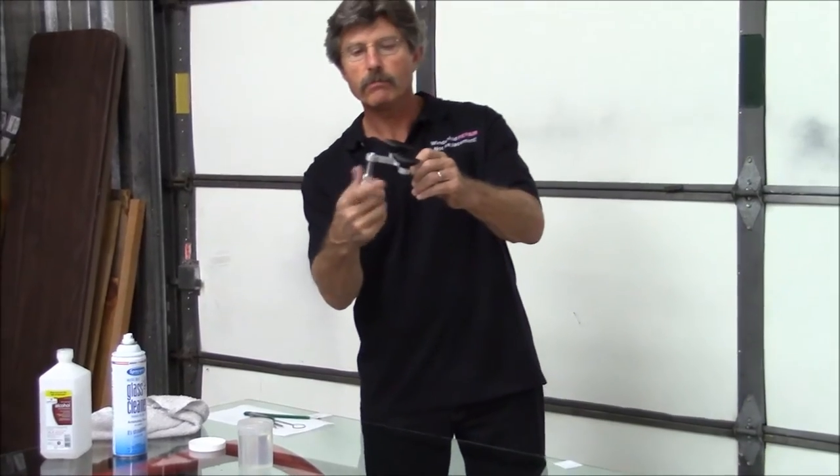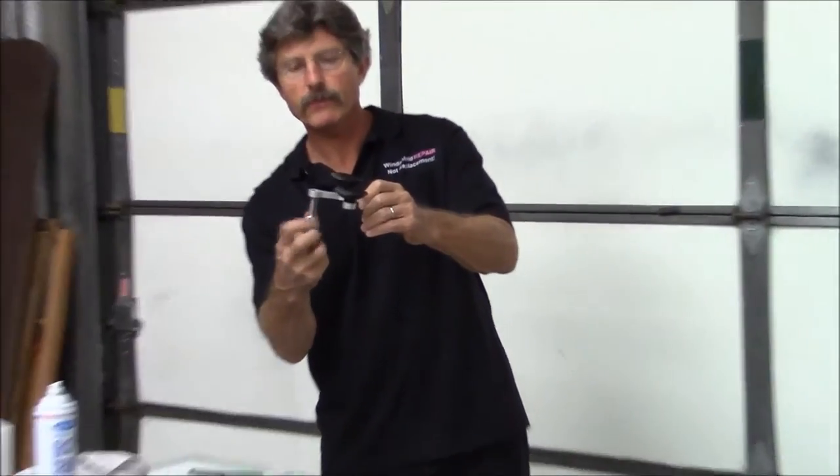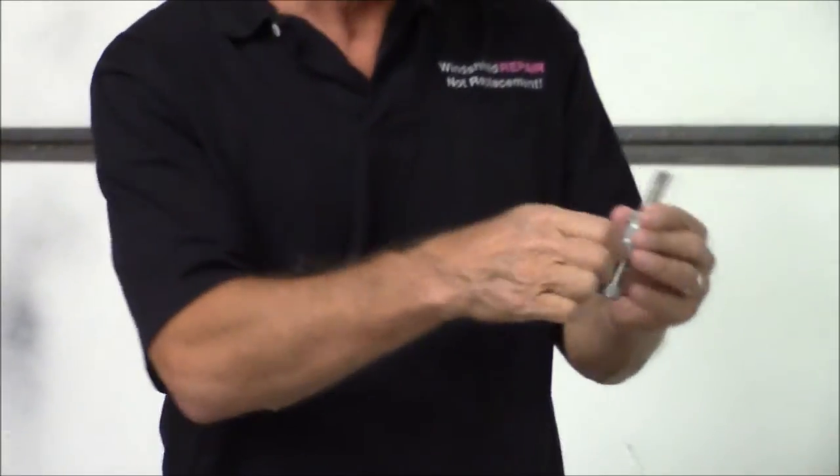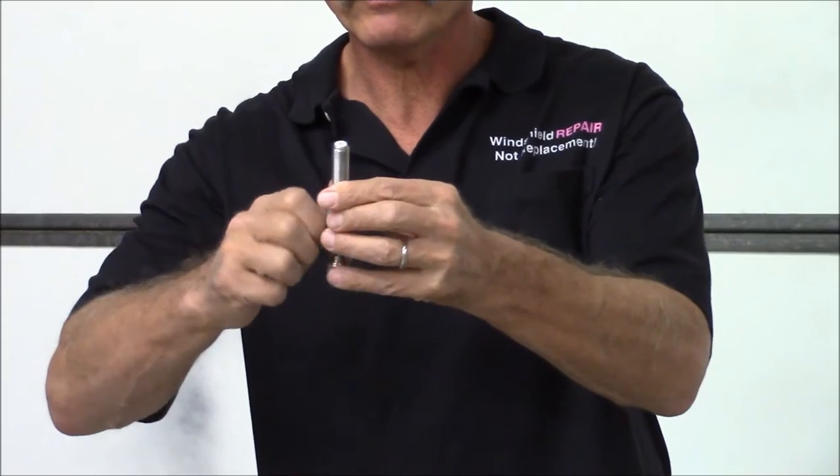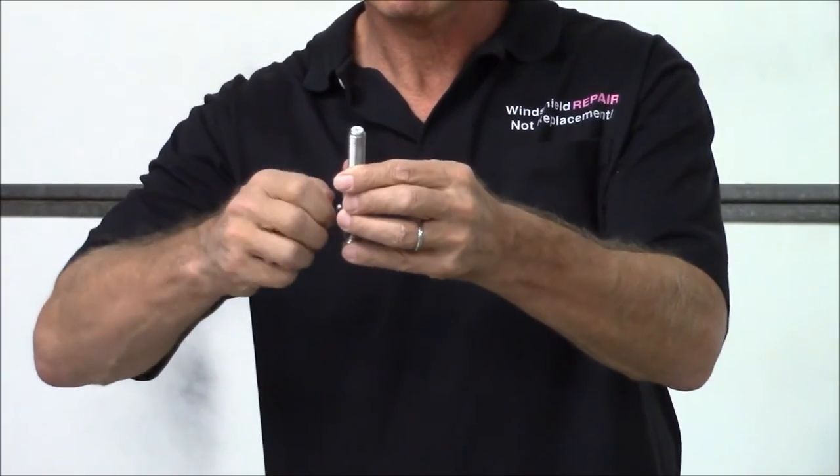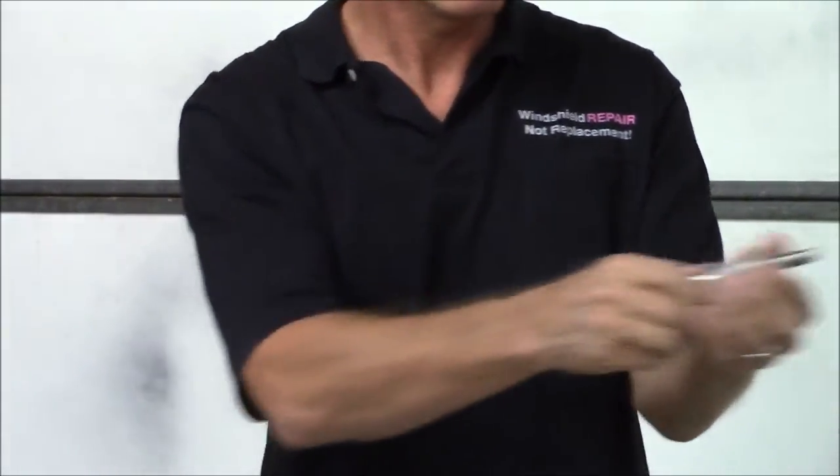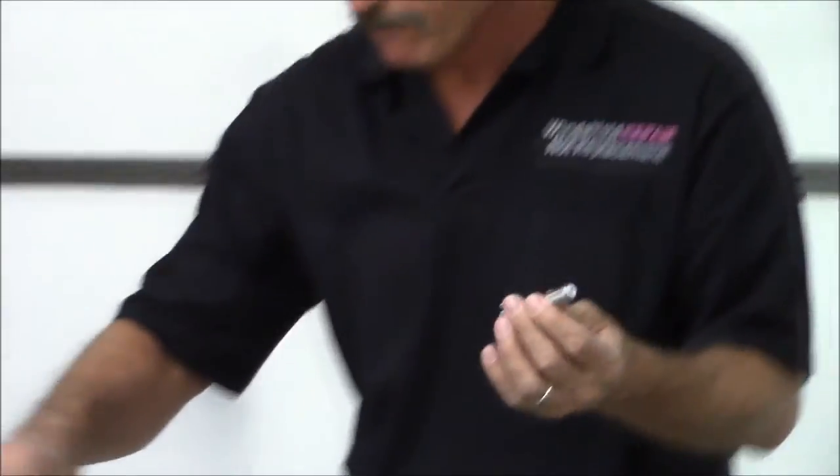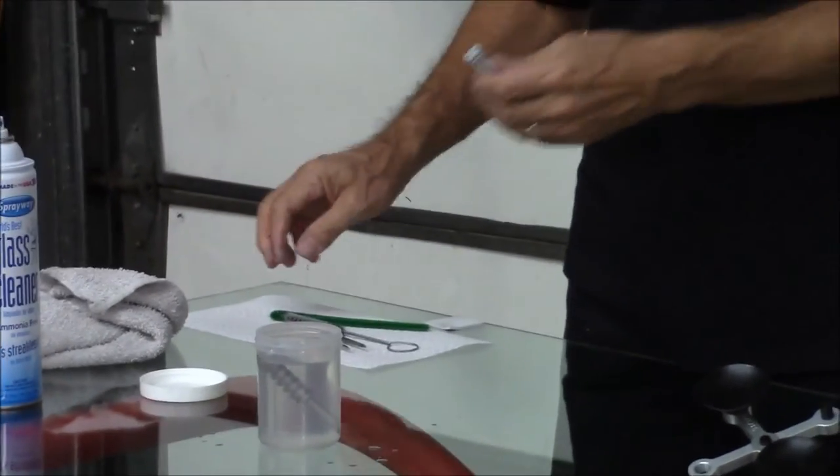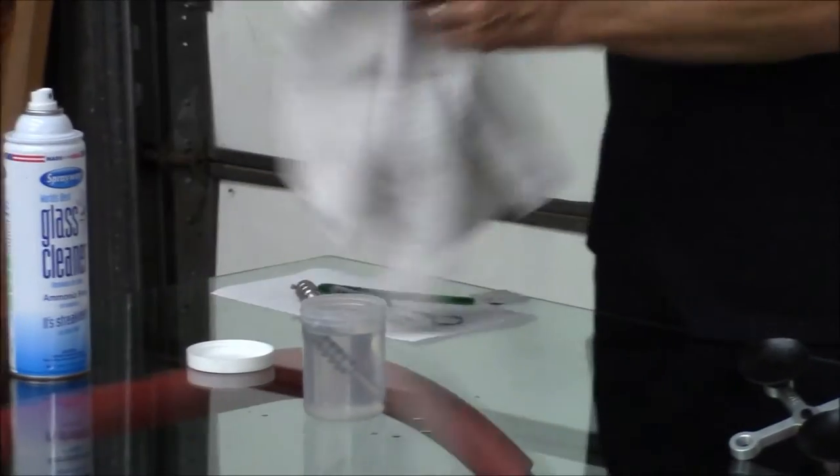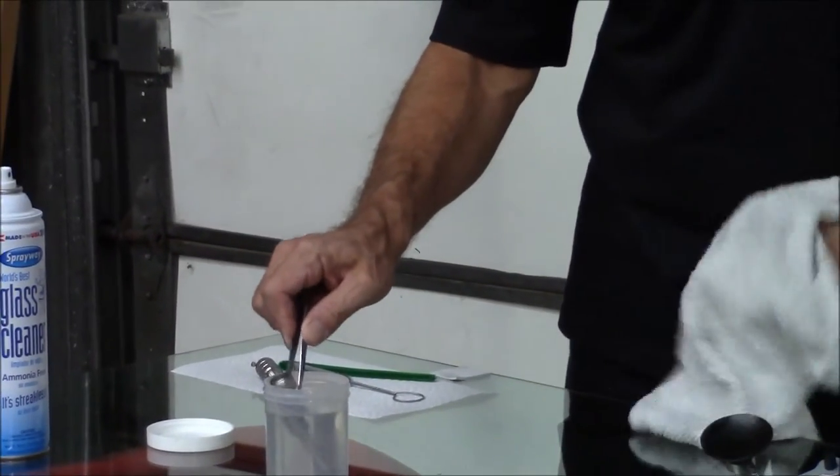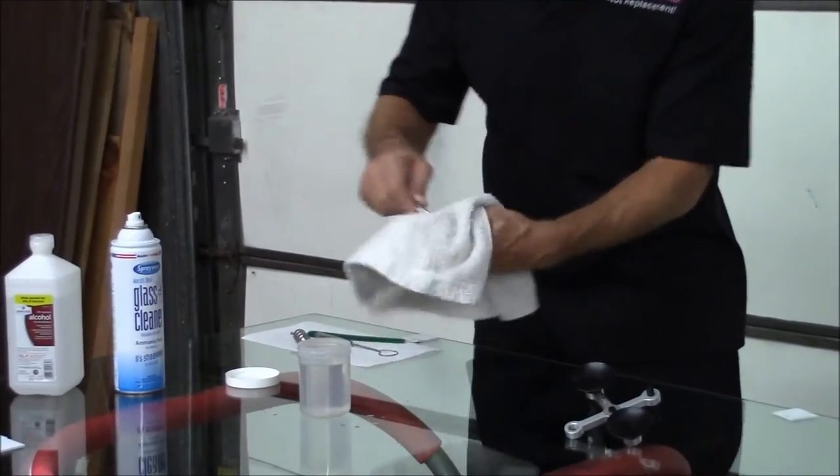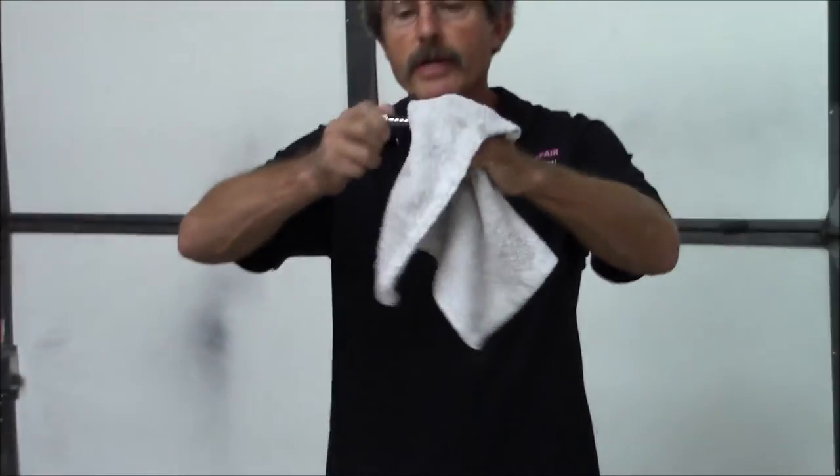Take the injector off of your structure. Loosen your set screw. Pull out your piston, place it in the alcohol, pull it out with your tweezers and then wipe it off with a rag.